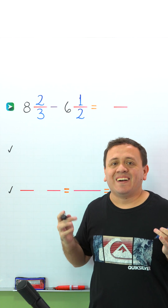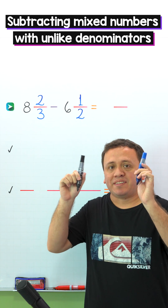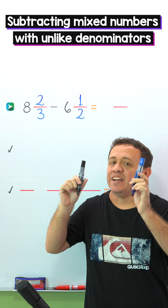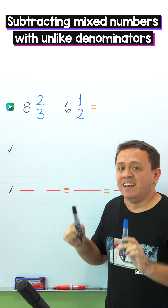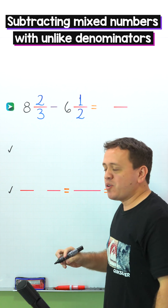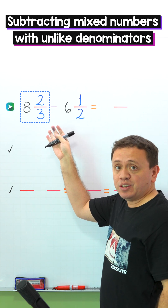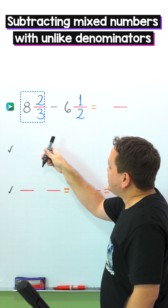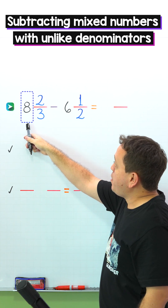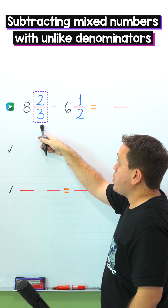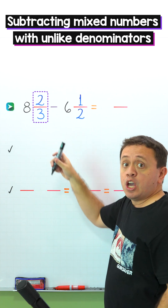Hi! Today we're going to take a look at how to subtract mixed numbers with unlike denominators. Let's start with a quick review. A mixed number, like this one, is the sum of a whole number and a proper fraction.